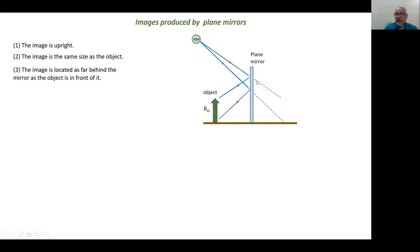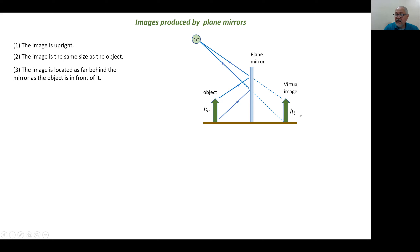The observer is looking at the mirror and sees the image behind the mirror — because of that, this is called the virtual image. No real light is forming this image: light comes from the object, reflects on the mirror, and goes to the observer. No light is going through the back side, but the observer sees the image behind the mirror. That's why we call this a virtual image, and it has the height HI.